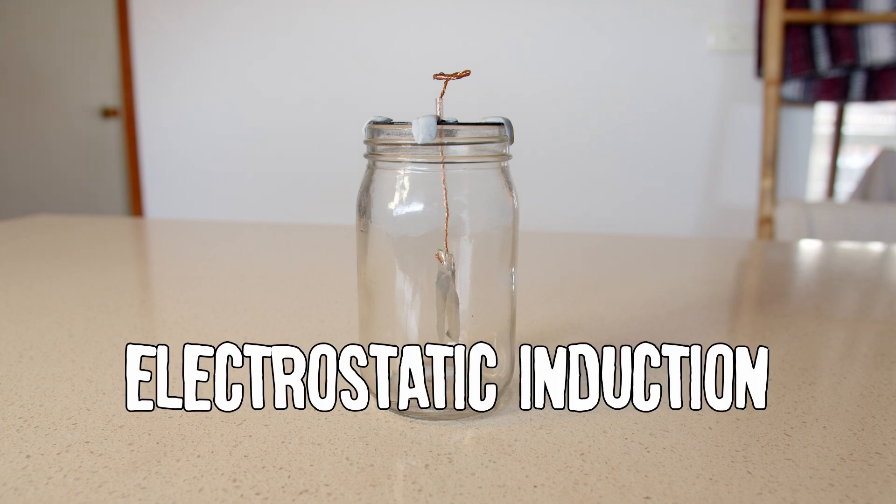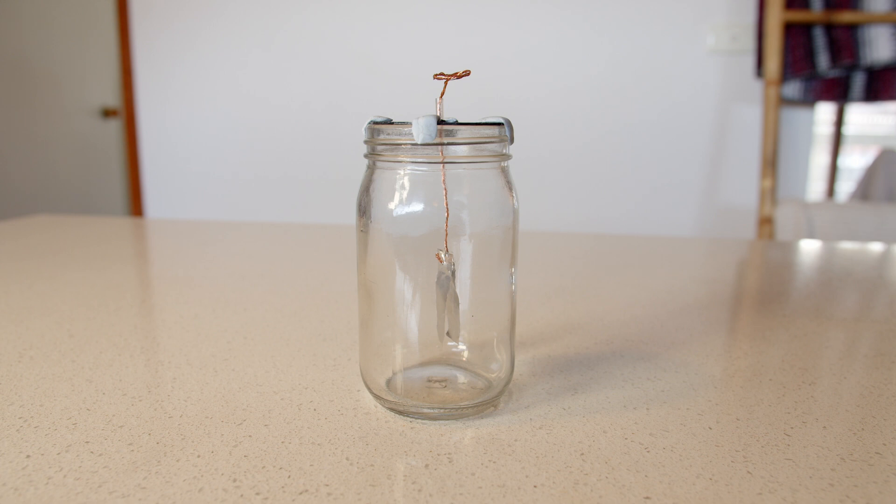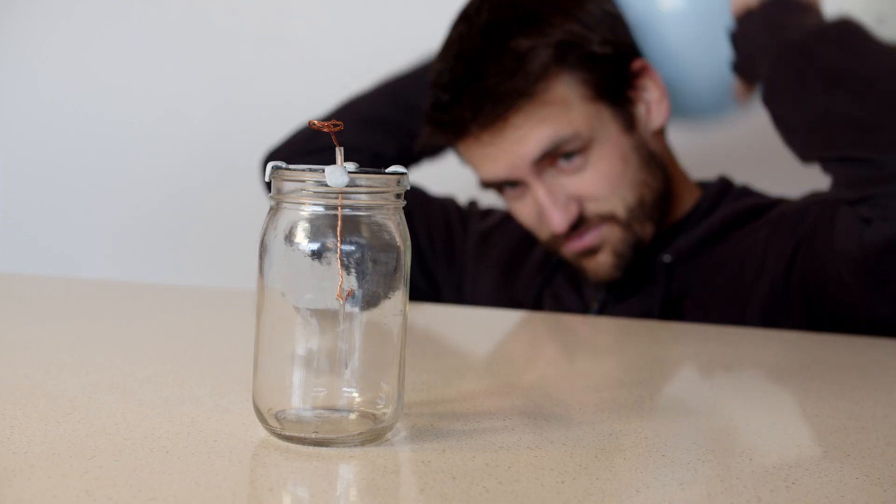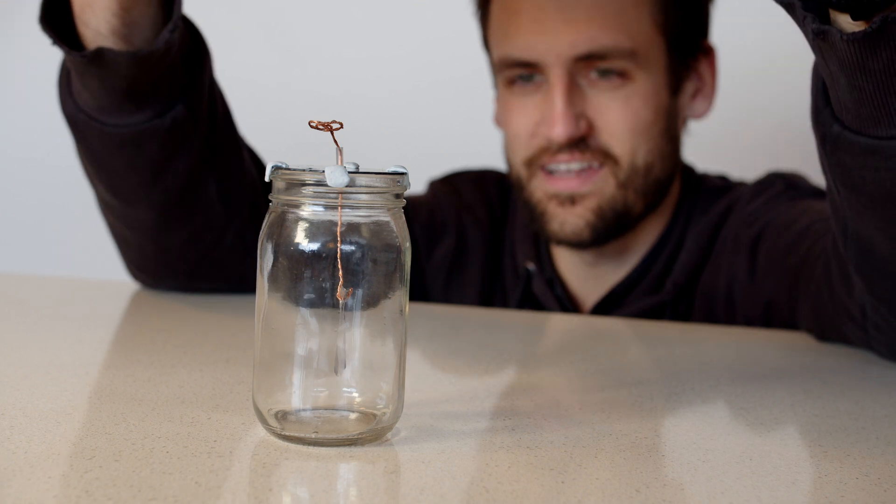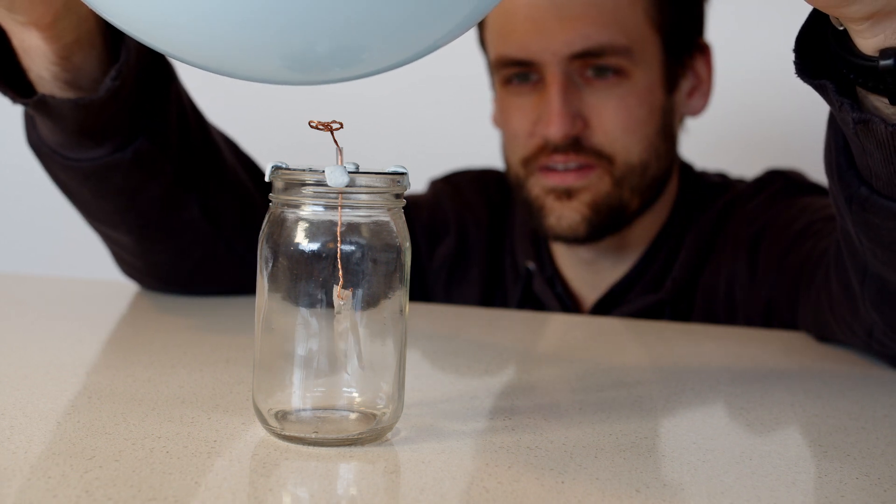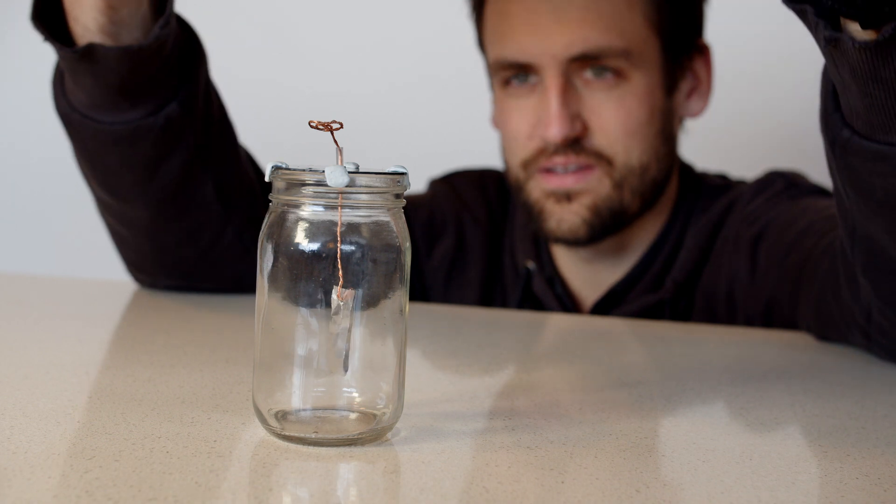This is called electrostatic induction. Let me tell you more about that. When I rub the balloon on my hair, it strips electrons—takes them from me and adds them to the balloon. The balloon becomes negatively charged because electrons are negatively charged particles. When I bring the balloon close to the copper wire in the jar, the negatively charged balloon pushes electrons in the copper away from it.